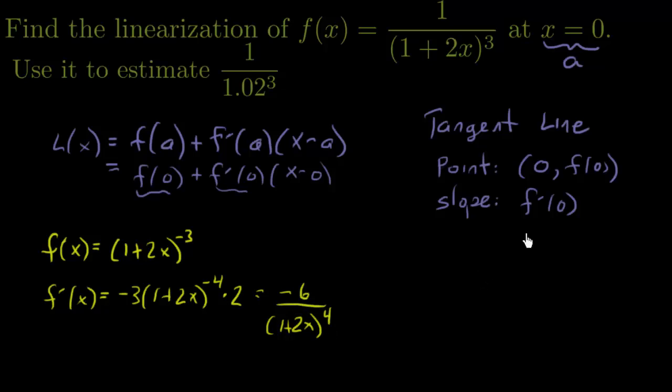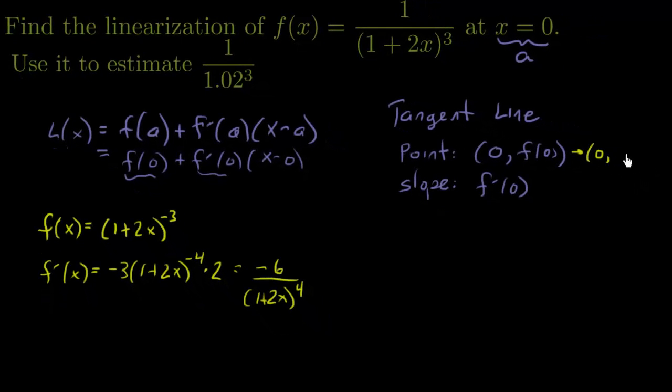All right, so what is f(0)? Now f(0) would just be plugging in 0 into this. So let's go down here. f(0), that's 1 over (1 plus 2 times 0) cubed, which is just 1 over 1 cubed, which is just 1. So there's my point.